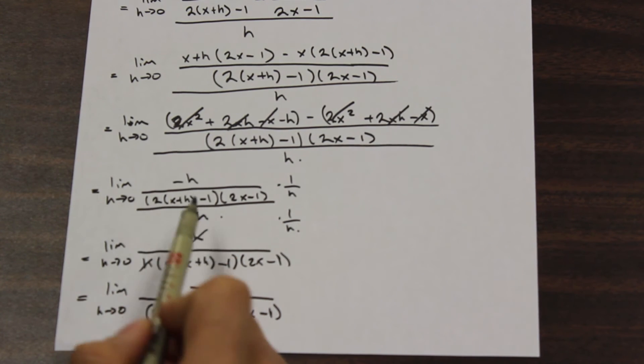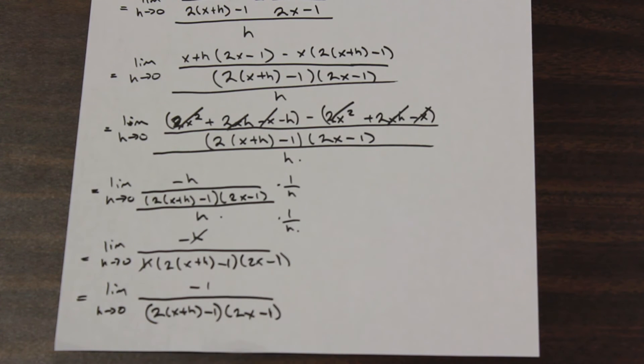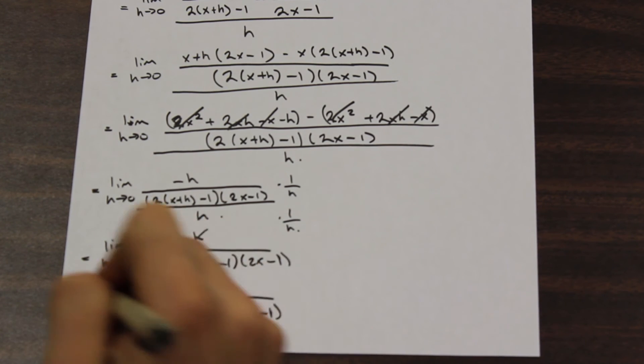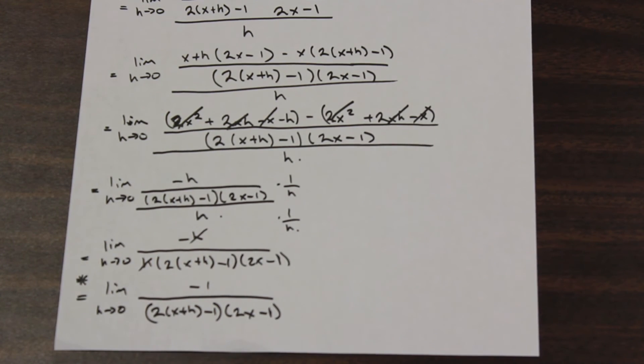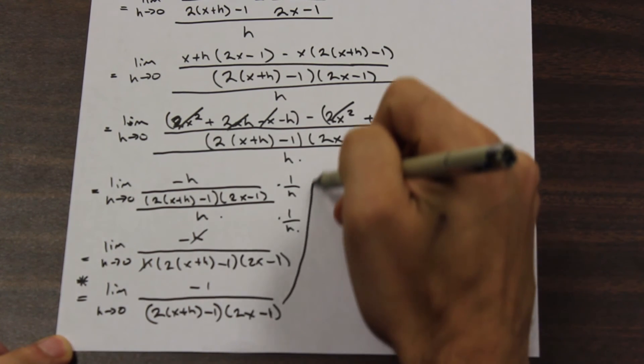However, we simplified and were able to get rid of that product of h with these terms. And as you can see now, if we go ahead and just apply this limit of h approaches 0, we will not be dividing by 0 anymore. And that will give us a limit that is defined. And that's what we want. So at this point here, I'm going to give that a star. At this point here is where we want to apply the limit. So I'm going to bring it up here. And let's go ahead and plug that in.